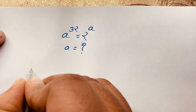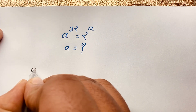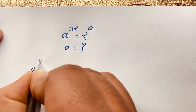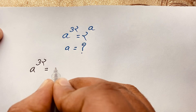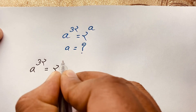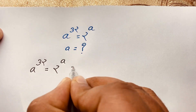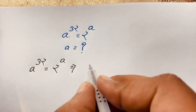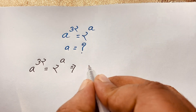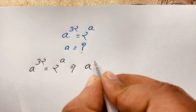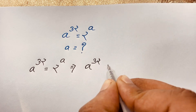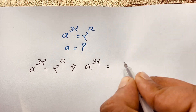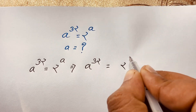Our question is a to the power 32 is equal to 2 to the power a. This is our question. You can see this expression here: a to the power 32 is equal to 2 to the power a.